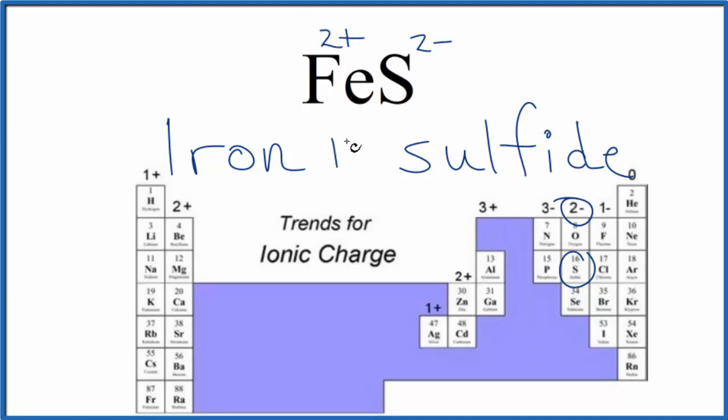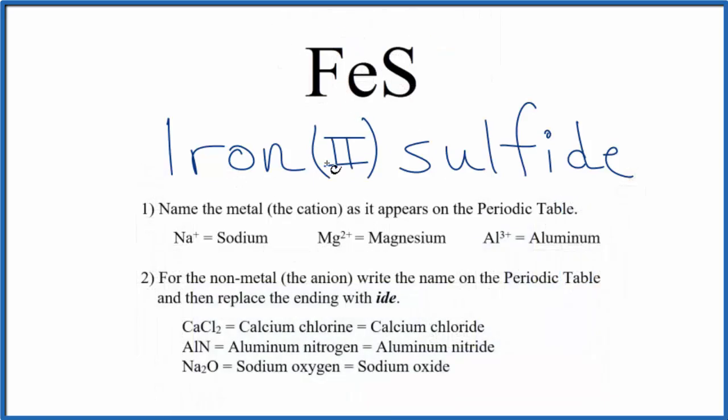In the name we put the Roman numeral II for this 2+ charge and put parentheses around it. So the name for FeS is iron(II) sulfide.